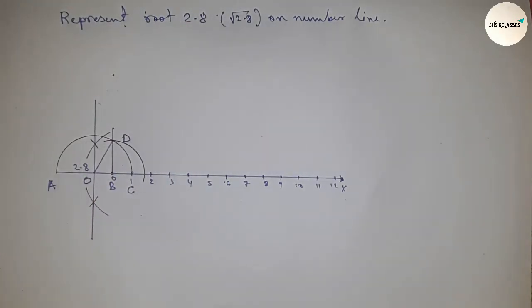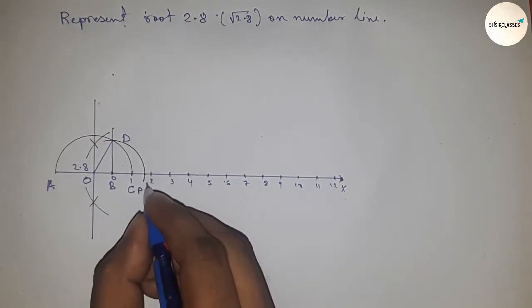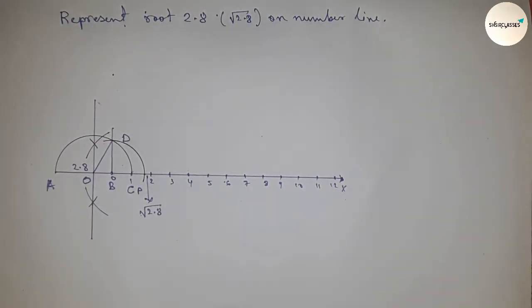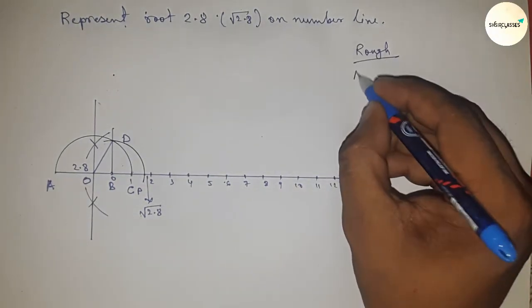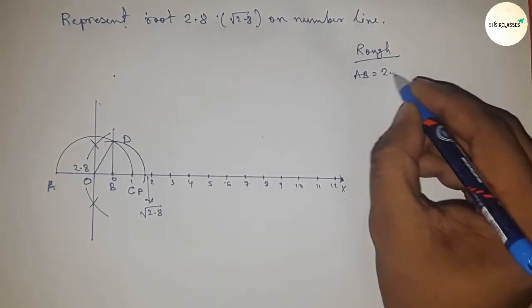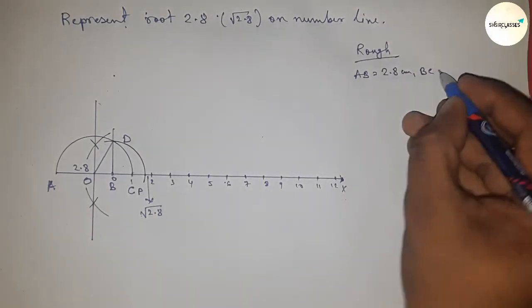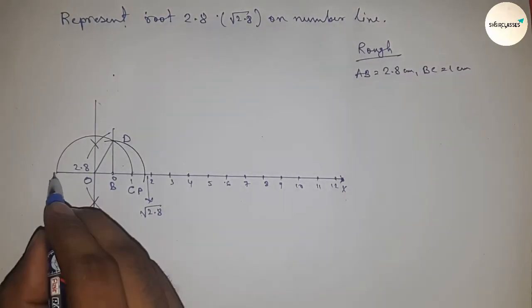This is the representation of root 2.8 on the number line. Now let's discuss the back calculation. Given: AB = 2.8 cm, BC = 1 cm.